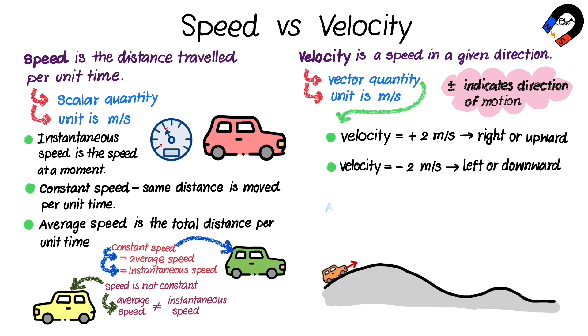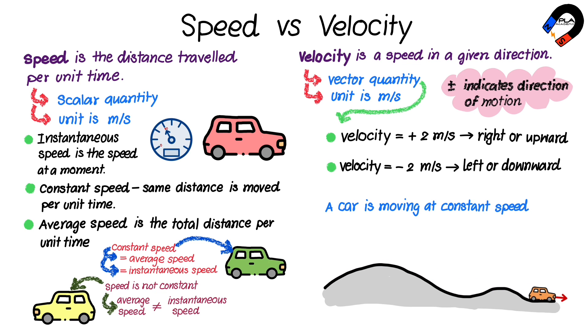If a car is moving up and down the hill at a constant speed, its velocity is not constant, because its direction is always changing.